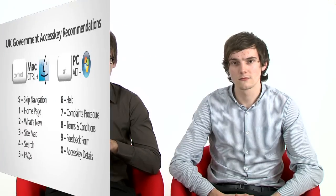In the UK there are government guidelines for defining access keys that British-based websites should adhere to. These are the standard: S for skip navigation, 1 should be a link to the home page, 2 to what's new, 3 to the sitemap, 4 to the search facility, 5 to the FAQs, 6 to help, 7 to your complaints procedure, 8 to terms and conditions, 9 to the feedback form, and 0 to access key details.